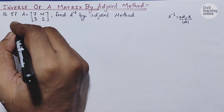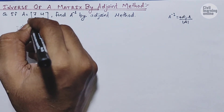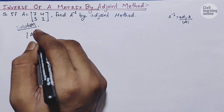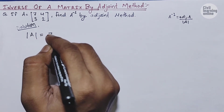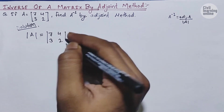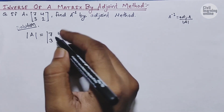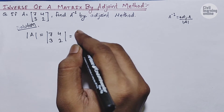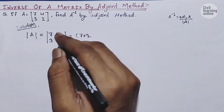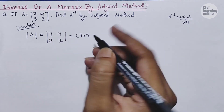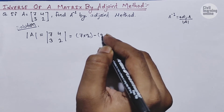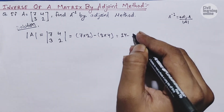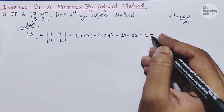Writing the solution: determinant of matrix A. The determinant is represented by straight lines, also called the modulus of matrix A, with elements 7, 3, 4, 2. We multiply the diagonal elements: 7 multiplied by 2, and for the off-diagonal elements 3 and 4 we take a minus sign. So we have 7 times 2 minus 3 times 4, which gives 14 minus 12.